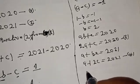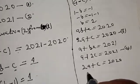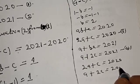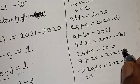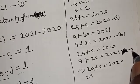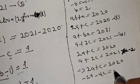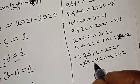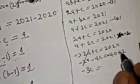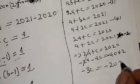From equations 3 and 4, we have the simultaneous system: 2A plus C equals 2020, and A plus 2C equals 2021. Using the elimination method, let's multiply equation 4 by minus 2: this gives minus 2A minus 4C equals minus 4042. Adding to equation 3: C minus 4C gives minus 3C equals 2020 minus 4042, which equals minus 2022.